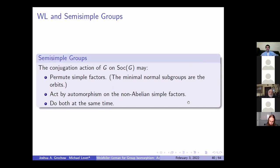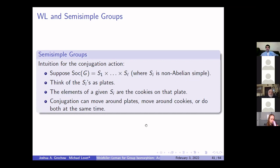The conjugation action on the direct factors of the socle can do a few things: it can permute the simple factors (where minimal normal subgroups are the orbits), it can act by automorphism on individual simple factors by moving elements around inside, or it can do both at the same time. My intuition: think of the direct factors as plates and the elements in a given direct factor as cookies on the plate. The conjugation action moves around the plates, moves around the cookies on individual plates, or both. To understand this action, we want to detect how plates and cookies are moved.